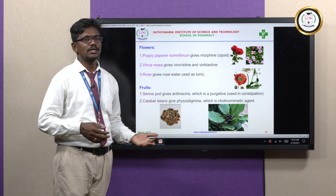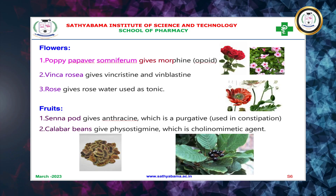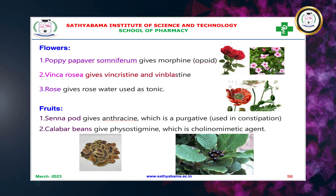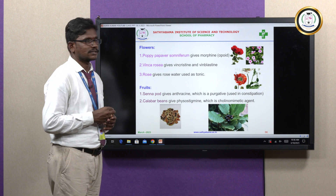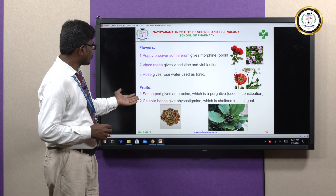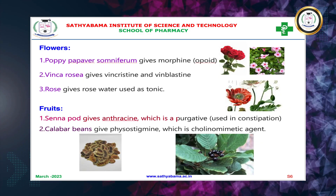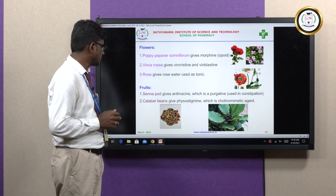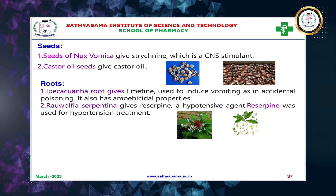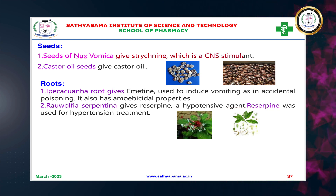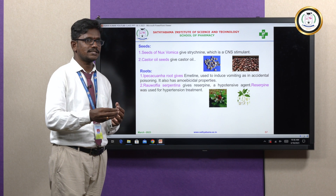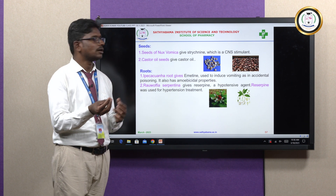From flowers: Papaver somniferum gives morphine, which is an opioid analgesic. Vinca roseus gives vincristine and vinblastine, which are used as anti-cancer drugs. Rose gives rose water, used as a cosmetic. From fruits: Senna pod gives anthraquinone, used as a purgative for the treatment of constipation. Calabar beans give physostigmine, which is a cholinomimetic agent. From seeds: seeds of Nux vomica give strychnine, a CNS stimulant that acts on the brain. Castor oil seeds give castor oil, which acts as a laxative, especially used in pediatric cases.